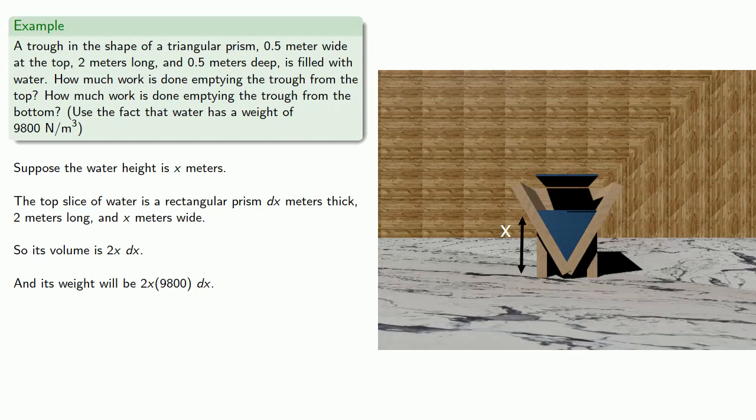Now, if we want to empty this out of the top, we need to lift this to the top. Since the trough itself is 0.5 meters deep, to get this slab of water to the top, it will have to be lifted 0.5 minus x meters.